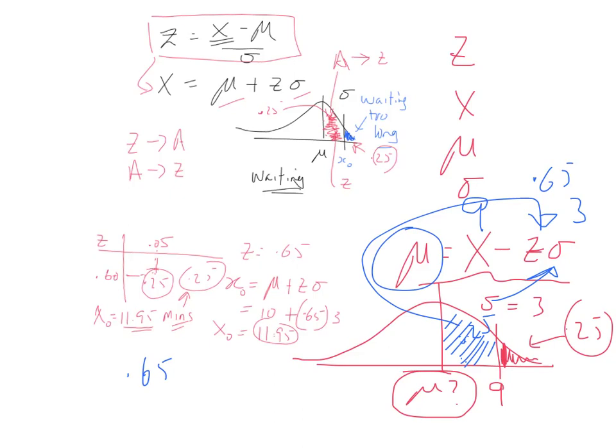In summary, the normal distribution is the most important distribution in statistics. It is a bell-shaped, symmetrical, unimodal, continuous distribution where the mean, median, and mode are all equal. Since it is continuous, the probability of any single point value is zero; we are interested in probabilities over ranges. To avoid integral calculus, we convert to the standard normal using Z = (X − μ) / σ and use the Z table to find areas under the curve.